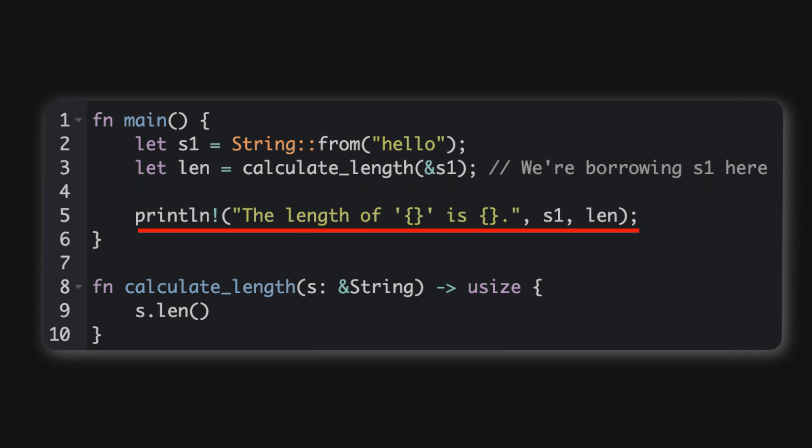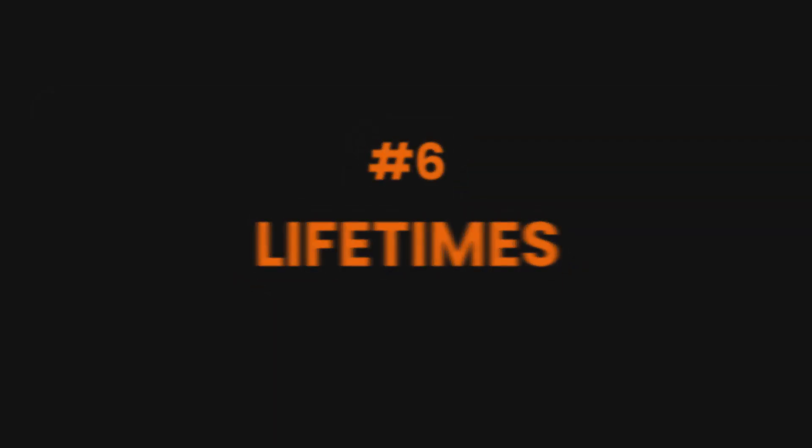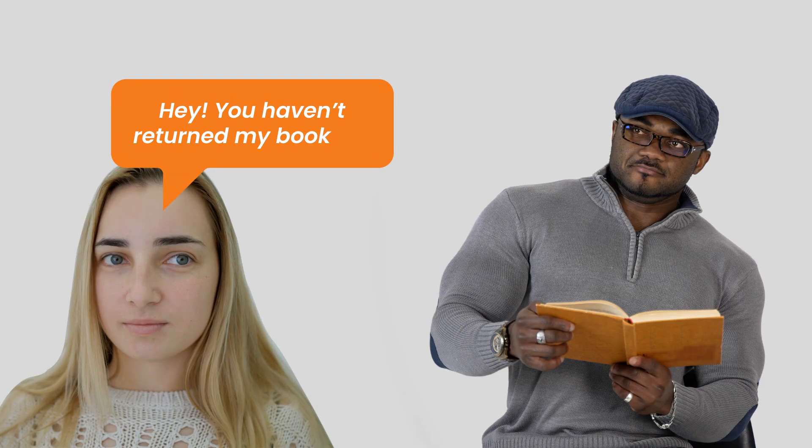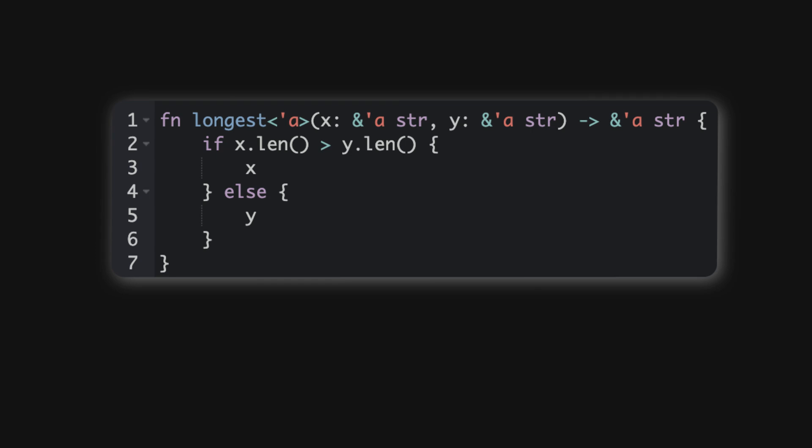Now lifetimes - this is Rust's way of making sure borrowed data doesn't outlive the owner. It's a little advanced, but understanding the basics will save you from some head-scratching moments. Let's look at an example function that uses lifetimes to keep things in check.